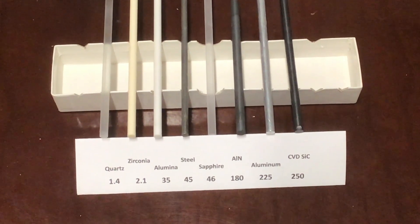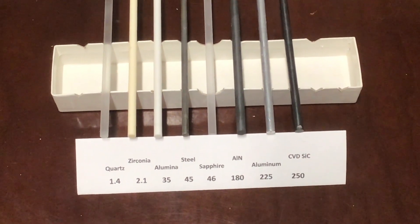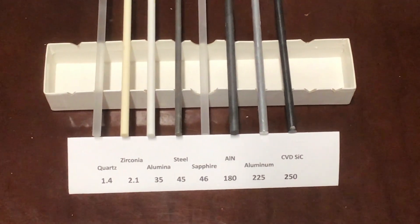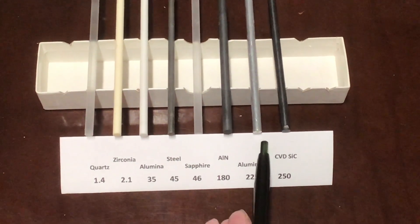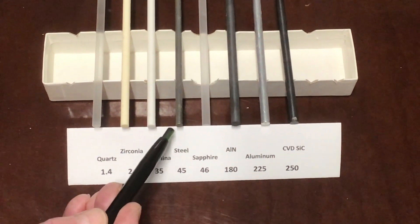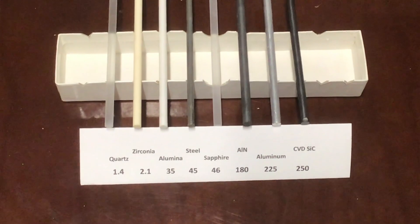First, we fabricated simple rods of several materials INSECO typically works with. Then also added similar rods of aluminum and steel for comparison's sake.